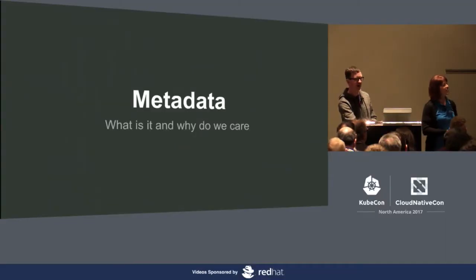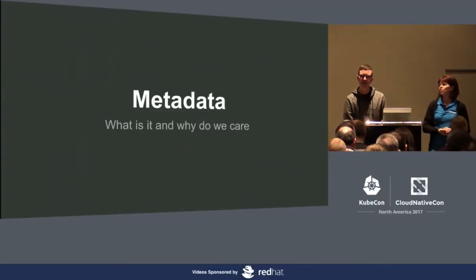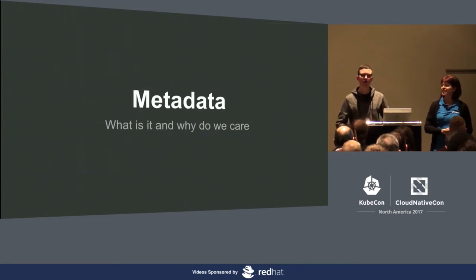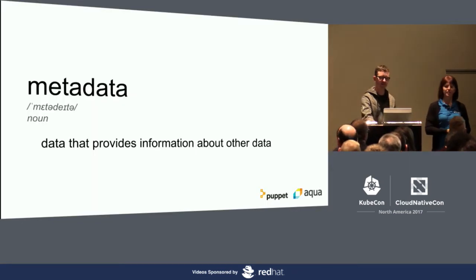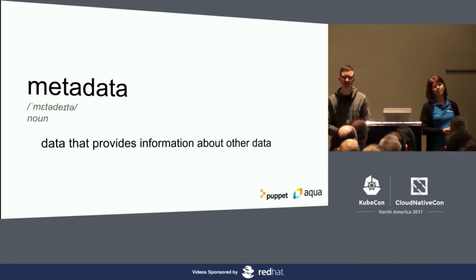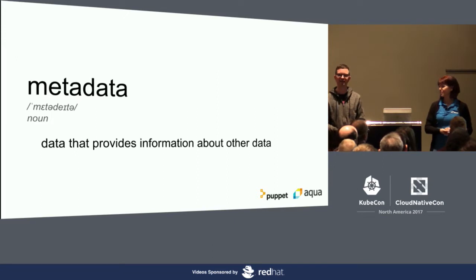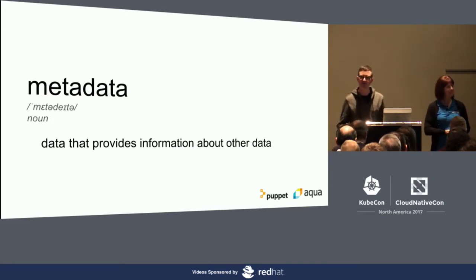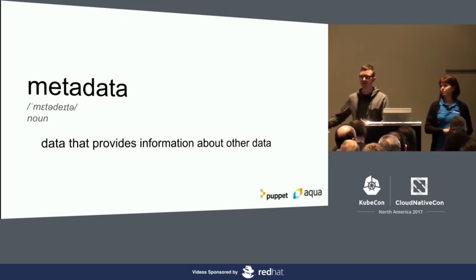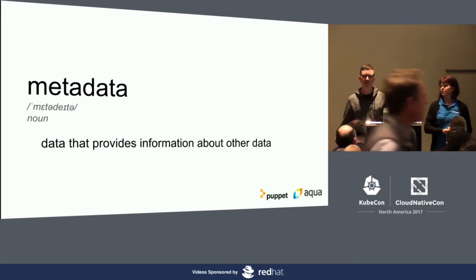So we'll start with the least Kubernetes bit of the talk: what is metadata? Heading to the dictionary is always a good idea. It says metadata is data that provides information about other data — which is pretty abstract, but it is about having information about things you already care about. So in Kubernetes, yes, you've got these deployments, services, and pods, but you might want information attached to them that you can use later.